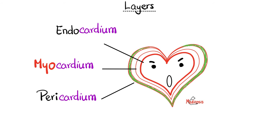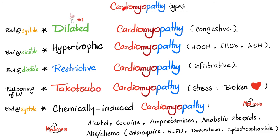Back to basics. Here is your heart. The wall of the heart has three layers: endocardium on the inside, myocardium — that's the muscle layer — and pericardium on the outside. There are many types of cardiomyopathy, including dilated cardiomyopathy, hypertrophic cardiomyopathy, and restrictive cardiomyopathy.